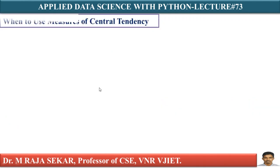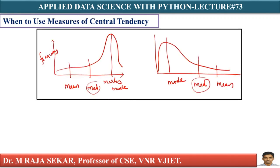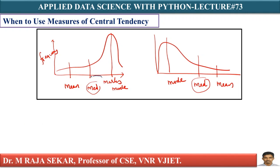Now, if you observe carefully in these two cases — the left-skewed case or the right-skewed case — median is always in the middle position. Look at the location of the median: whether the data is left-skewed or right-skewed, median is always in the middle. The location of the median is always in the middle.